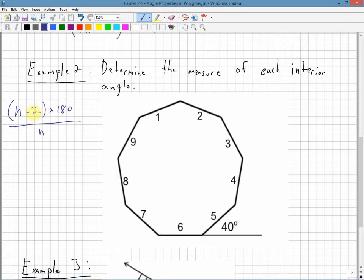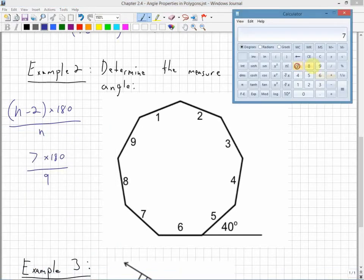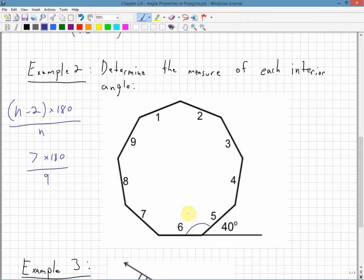So I have nine sides here. Nine minus two is seven times 180, and I'm going to take that value and divide by nine. Take seven times 180 divided by nine, each angle measurement is 140 degrees. Every angle in here is going to be 140 degrees.